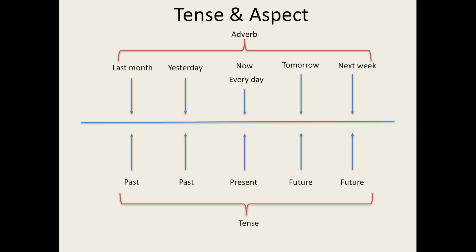Aspect is a bit more descriptive than tense. It tells us if a certain event in the past, future, or present happens once, happens continuously, or happens repeatedly. Ideas associated with aspect can also be expressed with adverbs.